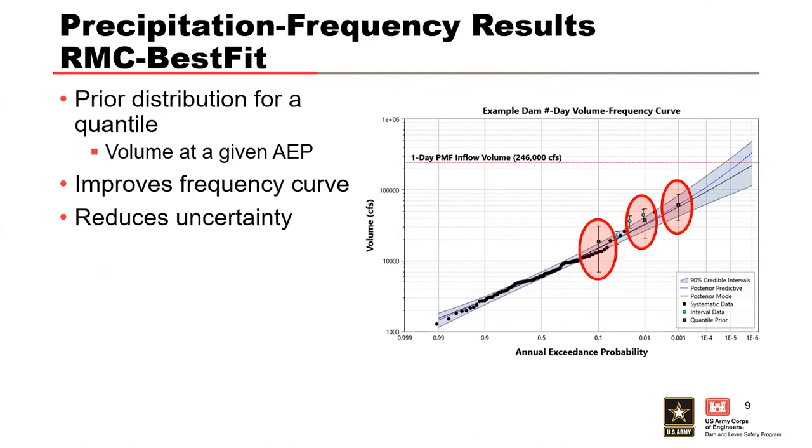Quantile prior distributions can have significant influence or leverage on the frequency curve. So, it's important to really do a good job of your estimates and understand your uncertainty, and understand what that standard deviation is. We'll get into the workshop just to test it, and so you can see how influential these priors can be. Additional information provided by the quantile priors will increase the effective record length, which reduces our uncertainty or width of our credible intervals.